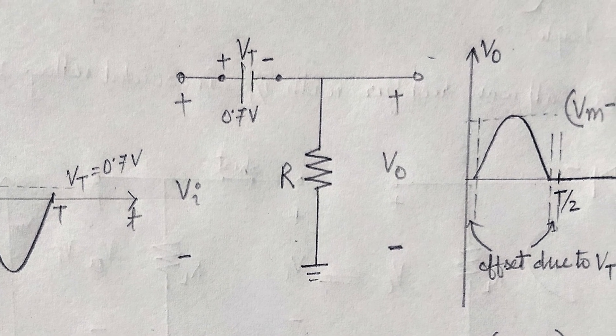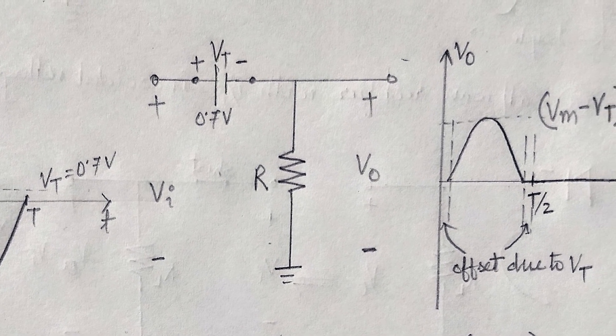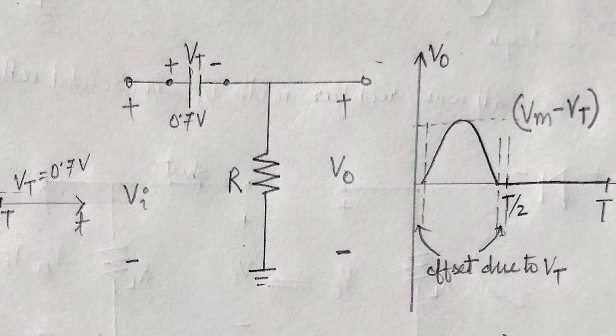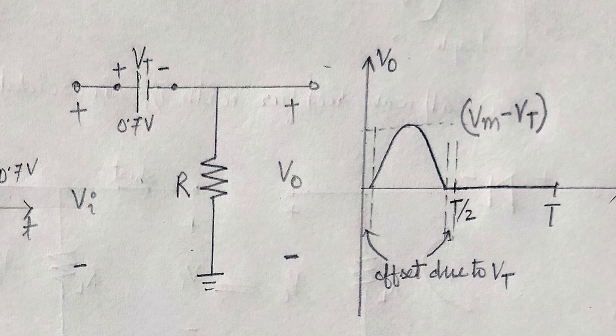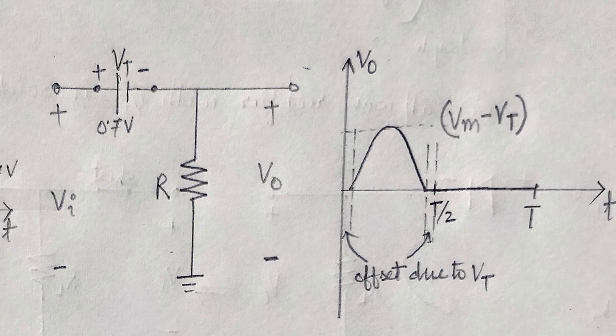For the levels of Vi less than Vt, the diode still acts as an open circuit and the output voltage is equal to zero. Therefore, Vout becomes equal to Vm minus Vt.